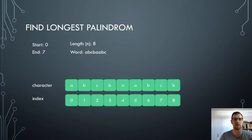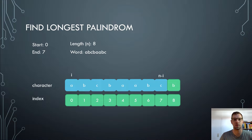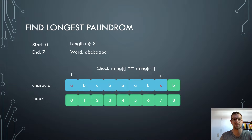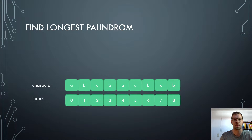Now we have the length of our string as 8 and we start at index 0 and end at index 7. So we look at the string ABCBABC. We set i to 0 and n minus i to 7. We compare the character at index i and at index n minus i, and these are not equal again. So we check the second substring of length 8, which goes from index 1 to index 8.